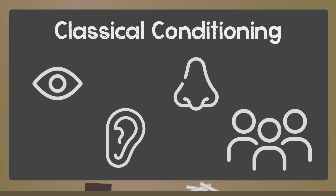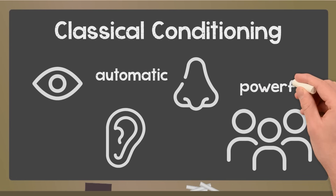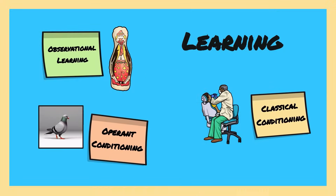Classical conditioning explains why we react to certain sights, sounds, smells — even people — the way we do. It's automatic, it's powerful, and it's just the beginning.